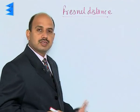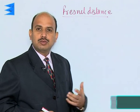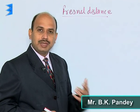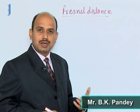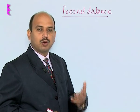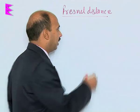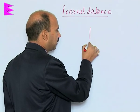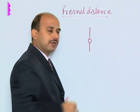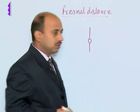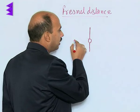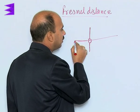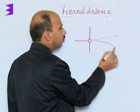Now, consider the concept of Fresnel distance. When an aperture is illuminated by a parallel beam of light of wavelength lambda, suppose this is an aperture and it is illuminated here, then the rays coming from here get spread in this way.